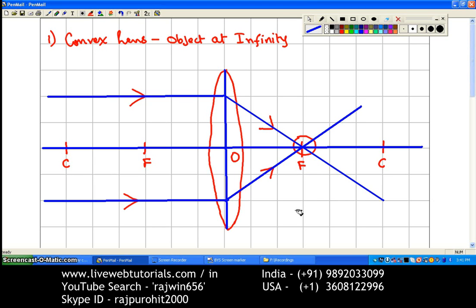So now we will discuss the characteristics of the image. The image is point size, or you can say it is highly diminished. The position of the image is at focus, and its nature is going to be real and inverted.